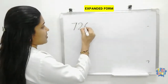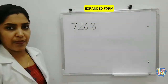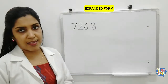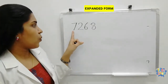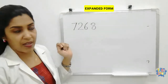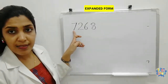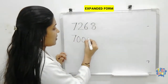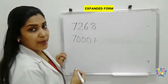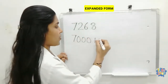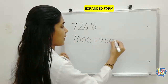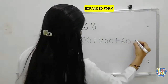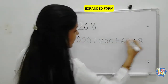Here we have 7,268. So first we can check what is the place value of 7. The 7 is in the thousands place, so the place value of 7 is 7,000. Plus, place value of 2 is 200. Place value of 6 is 60. And place value of 8 is 8.